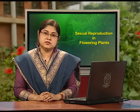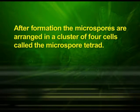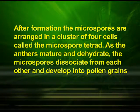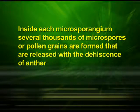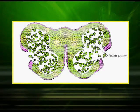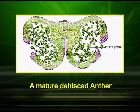After formation, the microspores are arranged in a cluster of four called the microspore tetrad. As the anther matures and dehydrates, the microspores dissociate from each other and develop into pollen grains. Inside each microsporangium, several thousands of microspores or pollen grains are formed that are released with the dehiscence of anther. Here in this diagram, you can see a mature dehisced anther with mature pollen grains coming out of the openings.